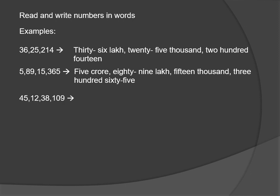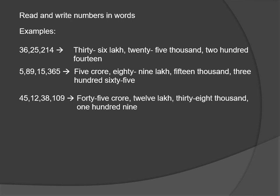One more example. Look at the periods and commas from right to left — there are ones, thousands, lakhs, and crores periods. Reading from left to right: there is 45 in the crores place, so 45 crores; 12 in the lakhs place, so 12 lakh; 38 in the thousands place, so 38,000; and 109 in the ones period. Read again: 45 crores, 12 lakhs, 38,000, 109. Remember, put commas after every period, even when writing in words.